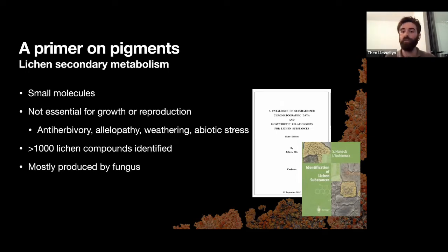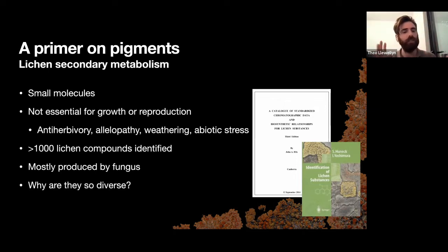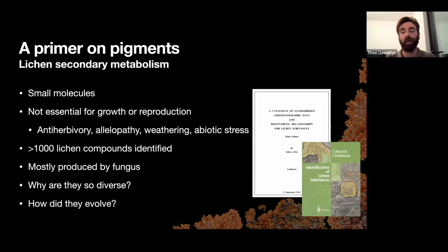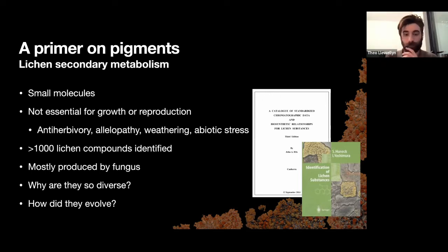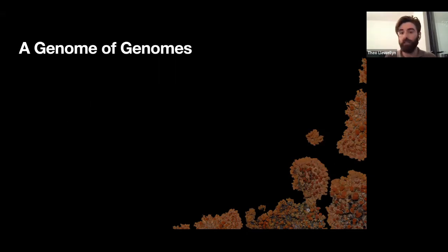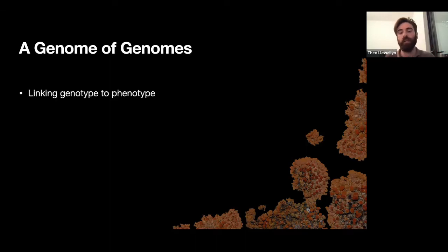Most of these compounds are produced by the fungus, not the algae or the microbiome. This situation led me and others to question: why are these compounds so diverse? Why are these fungi producing so many of them when lots of other fungi don't? And how did they evolve — why is it that this one group is able to produce these compounds when others are not? To answer this, I decided to look at the genetic level, trying to link the phenotype to the genotype to understand the genetic mechanisms underpinning production of these compounds.